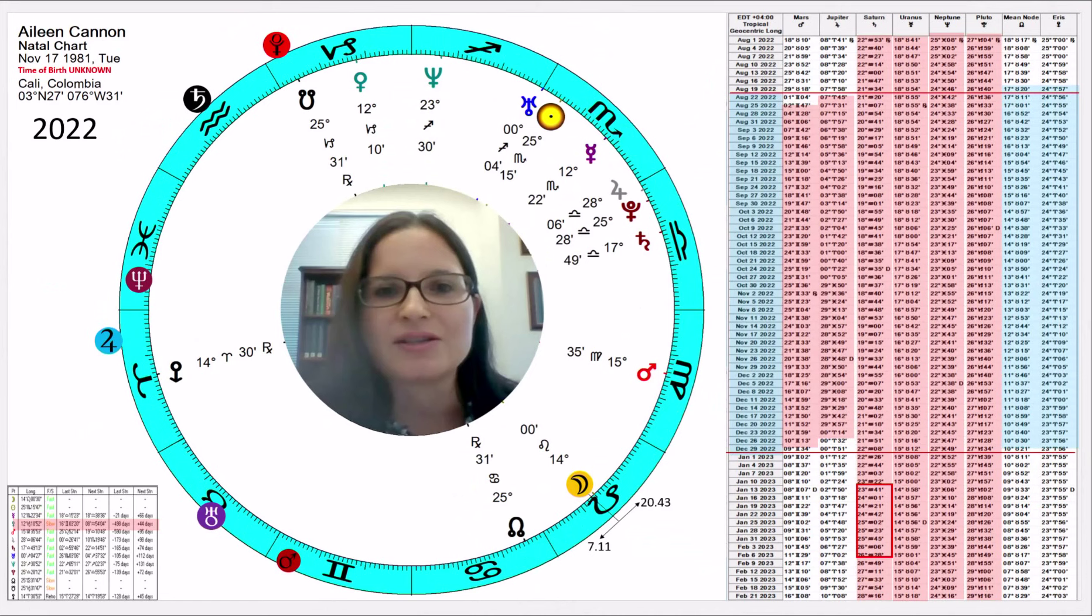In my last video, I displayed this chart as Eileen Cannon's birthday and made the case that the November 17, 1981 chart could well explain what happened to her in 2022.